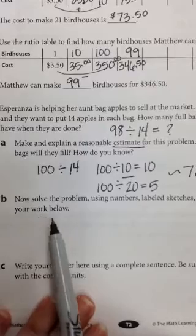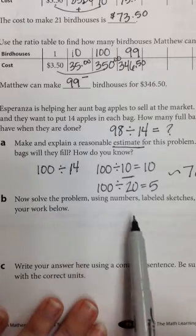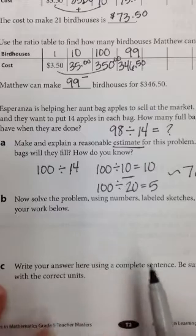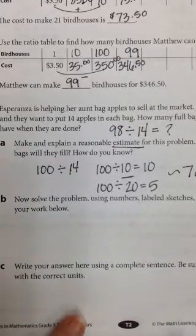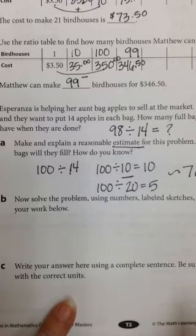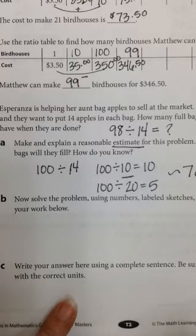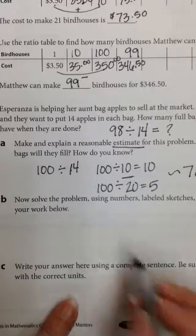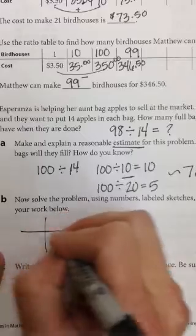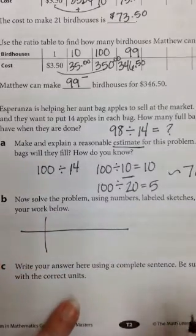So on problem B, it says now solve the problem using numbers, labeled sketches, or words, and show your work. So you can solve this in any way. You can use standard algorithm. You can use a ratio table. You could use any method that you wanted, over and under, whatever works for you. So I like to use a ratio table because that's just me. That's my method of choice.